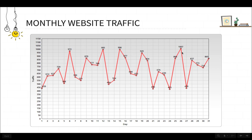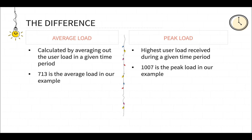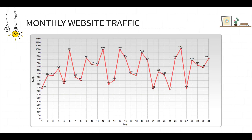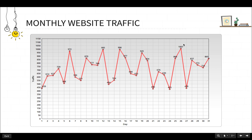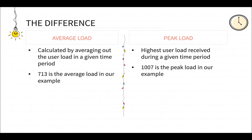So the average load is calculated by averaging out the user load in a given time period. In our example, by adding all the values and dividing by 31, we get 713 — so 713 is our average load. Peak load is the highest user load received during a given time period; in our example that is 1007. I hope this clears the difference between average load and peak load.